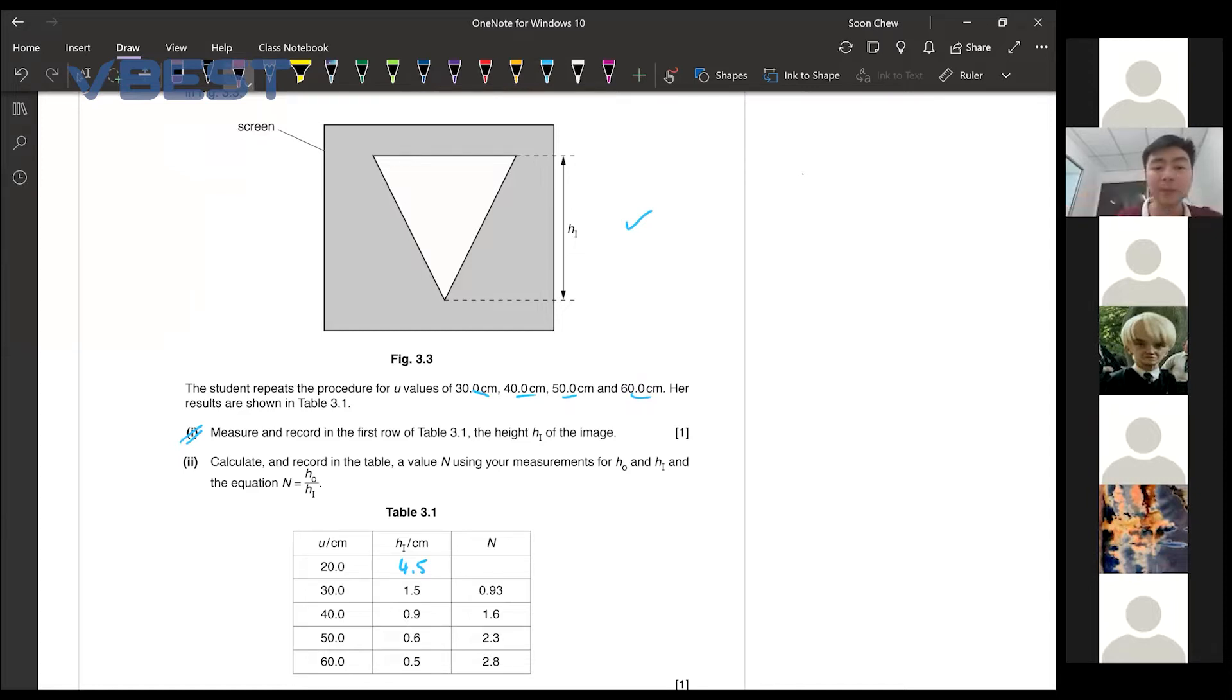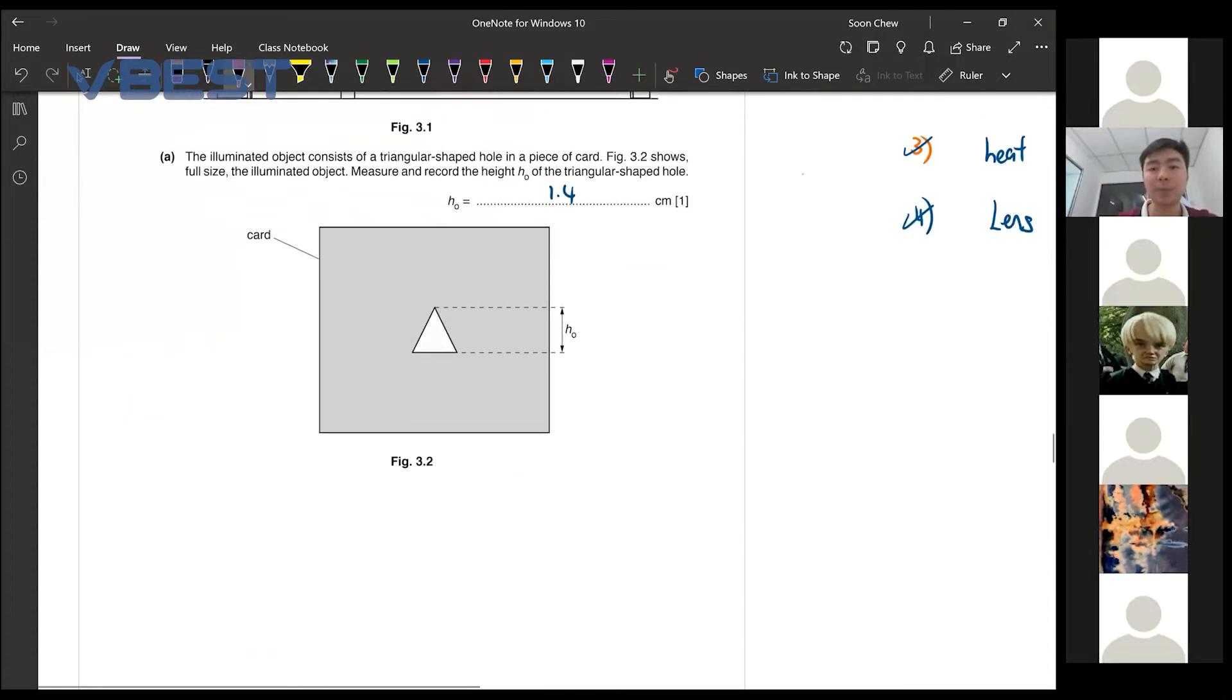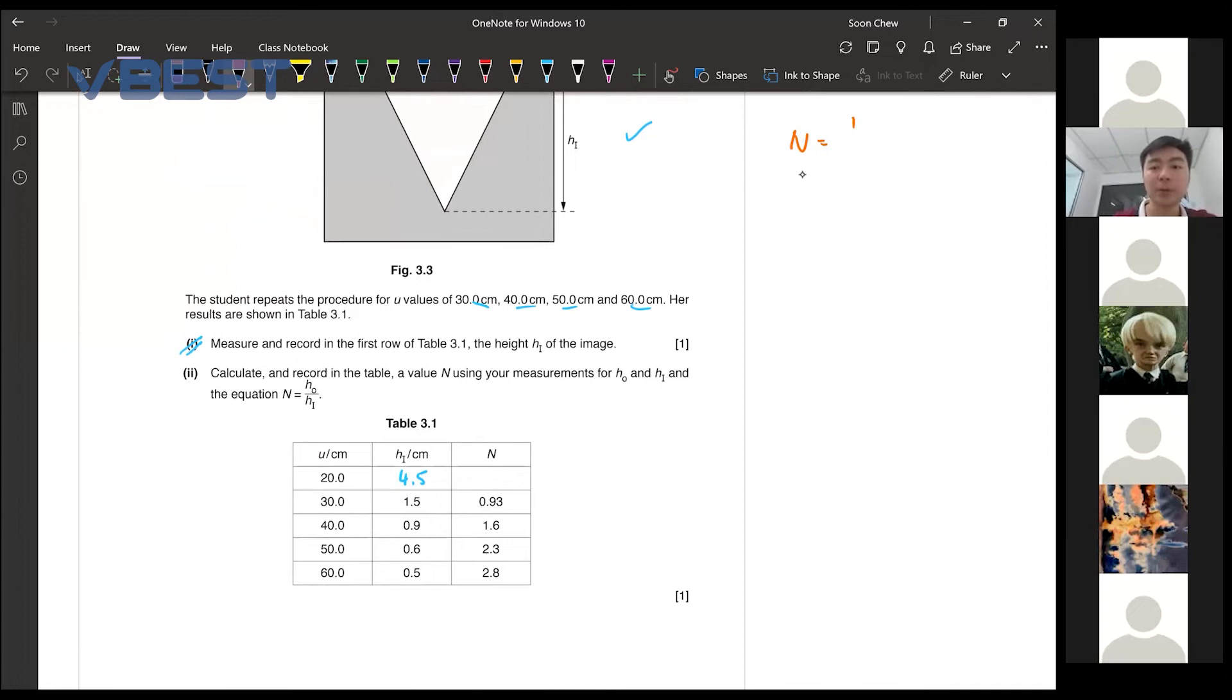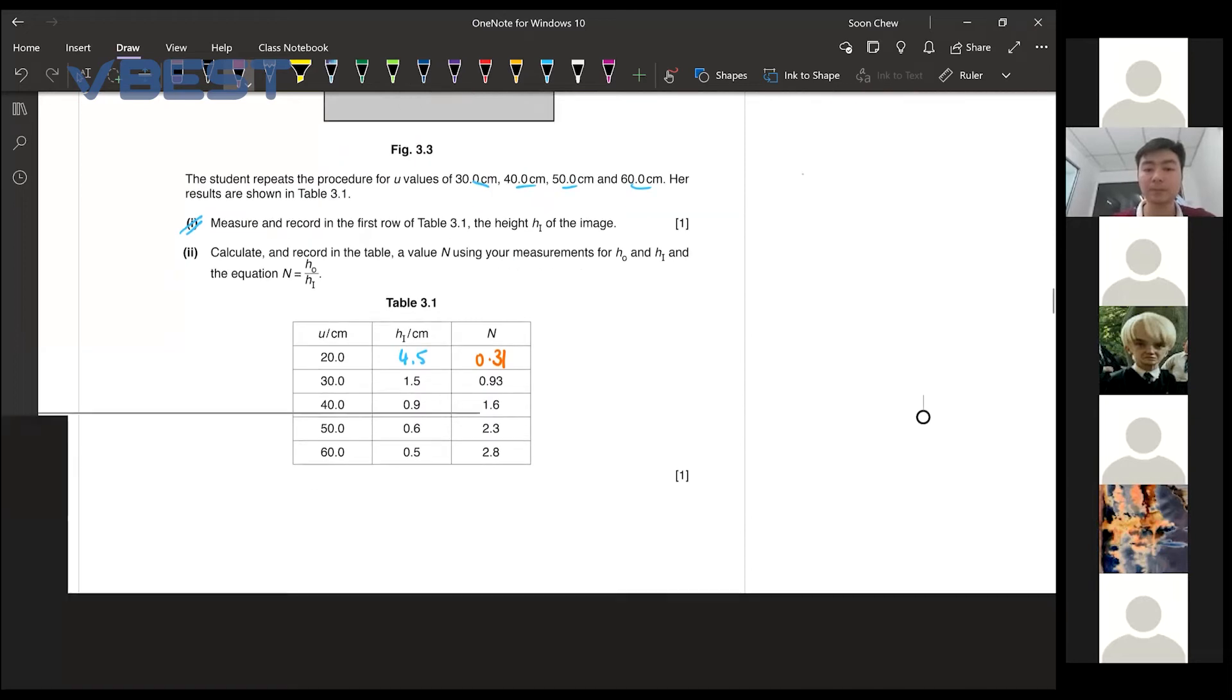Now, as for part 2, they want you to calculate the value of N. They have given you the N formula to be H_object over H_image. So N equals to 1.4 divided by 4.5. So at the end, you should get about 0.3111. But then, you follow their significant figure. You can see that all of them are having two significant figures. So we put 0.31.